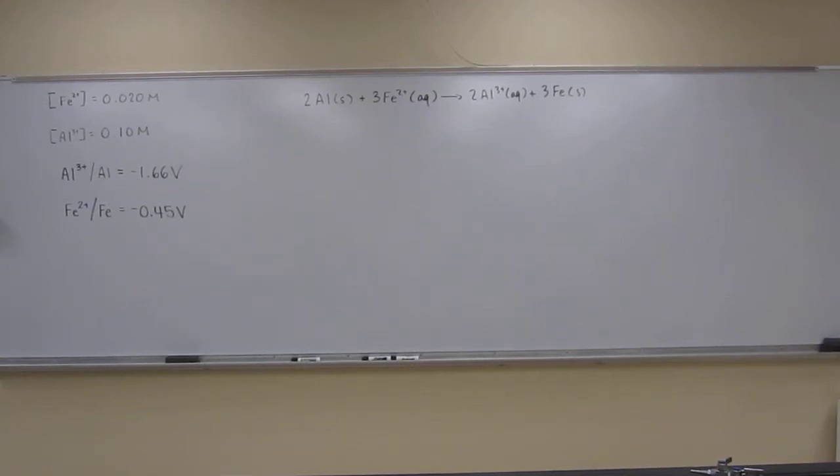Okay, so let's try this one. It says calculate the cell potential at 25 degrees Celsius for the reaction pictured: 2 aluminum solid plus 3 iron 2 plus aqueous goes to 2 aluminum 3 plus aqueous plus 3 iron solid. Given that the concentration of iron 2 plus is 0.020 molar, the concentration of aluminum 3 plus is 0.10 molar, and the standard reduction potential for the aluminum reaction is negative 1.66 volts and negative 0.45 volts for the iron reaction.